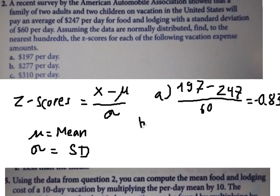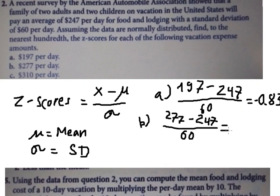Similar for question B, we put 277 for X. And now we write the same. So we have 0.5.